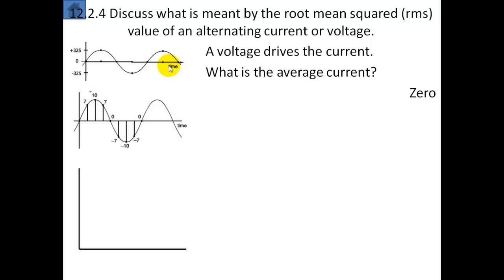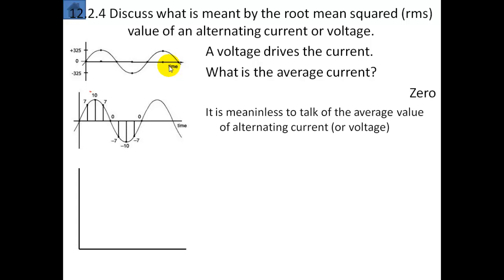This is a problem that we need to find a mathematical trick to overcome. It's meaningless to talk of the average value of the AC current or the AC voltage. So we have to do a trick. Instead, we take all the values and square them. If we square any value, unless you're dealing with complex numbers, you will end up with positive values. But then we can find the average of the positive values — the positive squares.